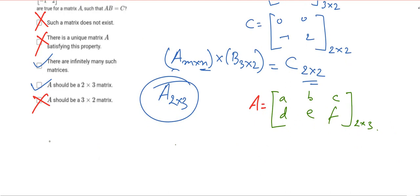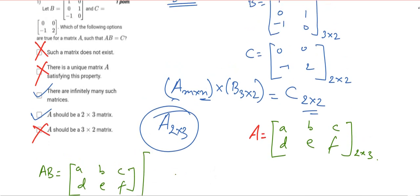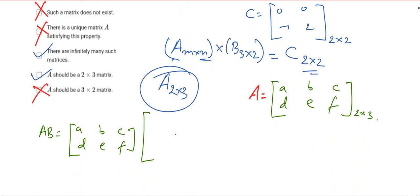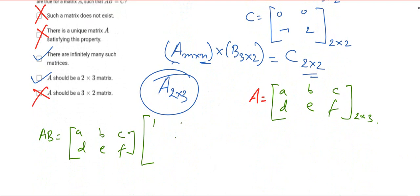Let's try to find AB which is nothing but [a, b, c; d, e, f] multiplied with [1, 0; 0, 1; -1, 0].